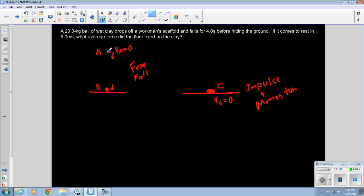The velocity at A is also equal to zero. We're going to start - it drops off the workman's scaffold. It's not thrown down, so it doesn't have initial velocity. The start is A, and this velocity at B is equal to question mark. We don't know.